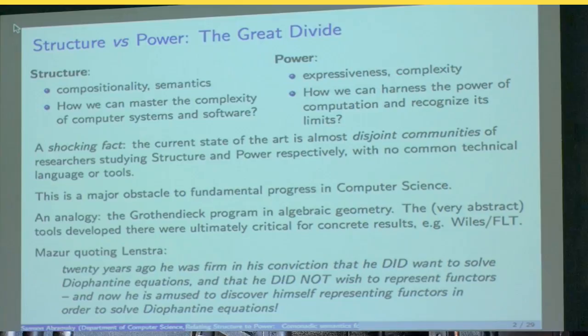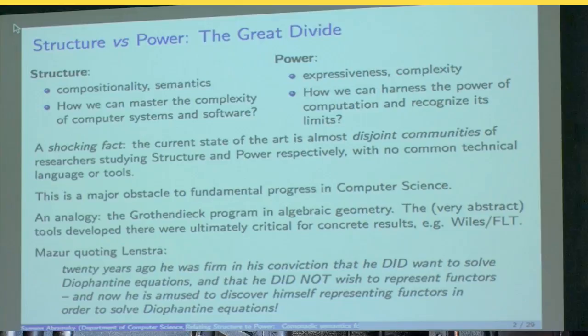And here's a quote from renowned number theorist, Barry Mazur, quoting another number theorist and computer scientist, Hendrik Lenstra, in a conference proceedings of lectures around the Wiles proof. So, Mazur quotes Lenstra saying that 20 years ago he was firm in his conviction that he did want to solve diophantine equations and he did not wish to represent functors. And now he's amused to discover himself representing functors in order to solve diophantine equations. So maybe one day we'll get those complexity theorists.